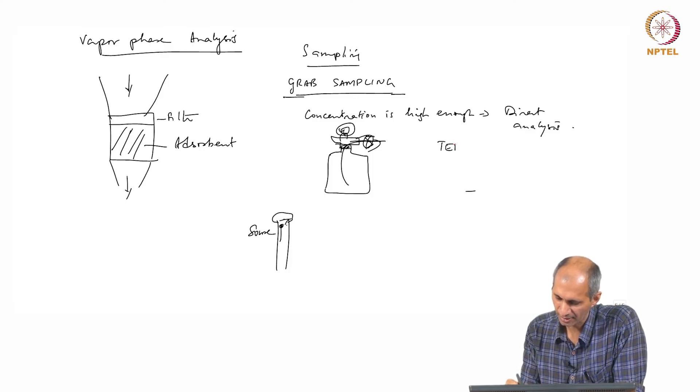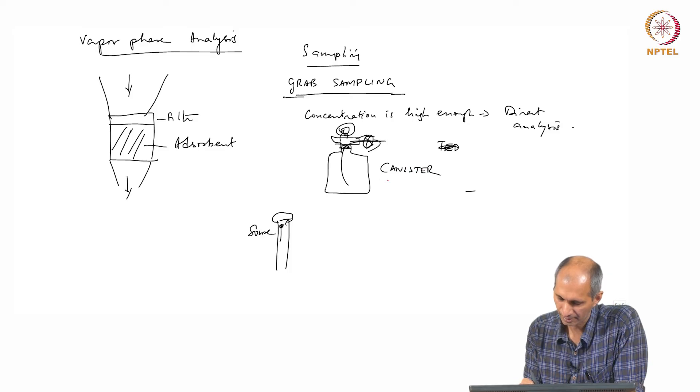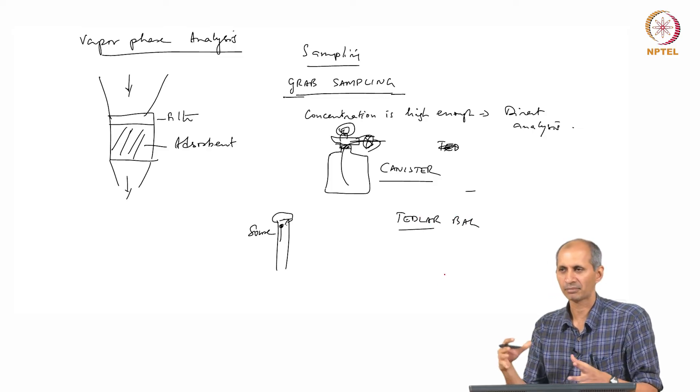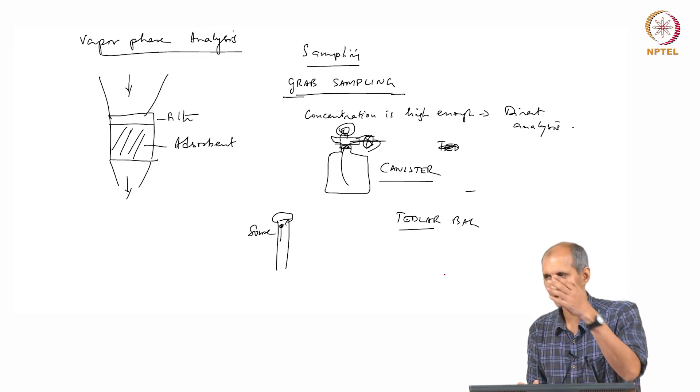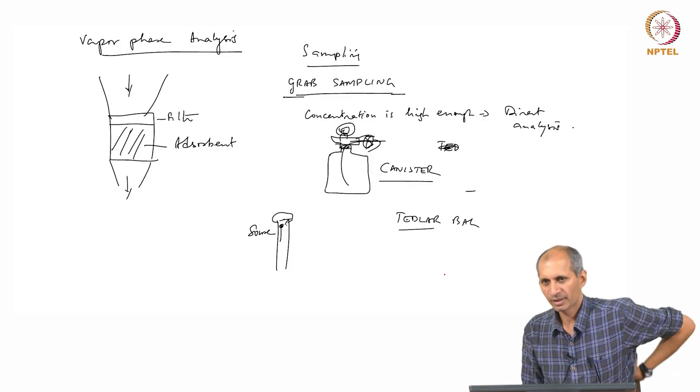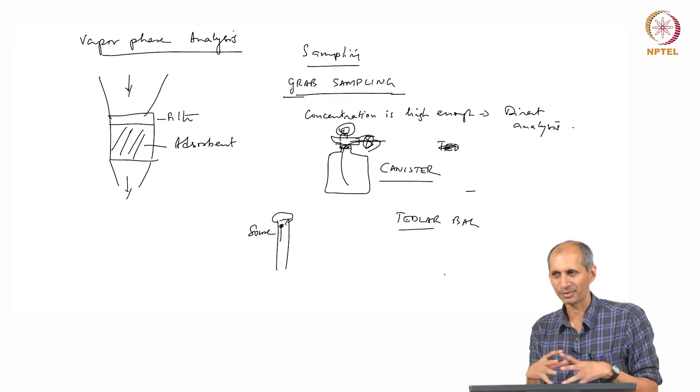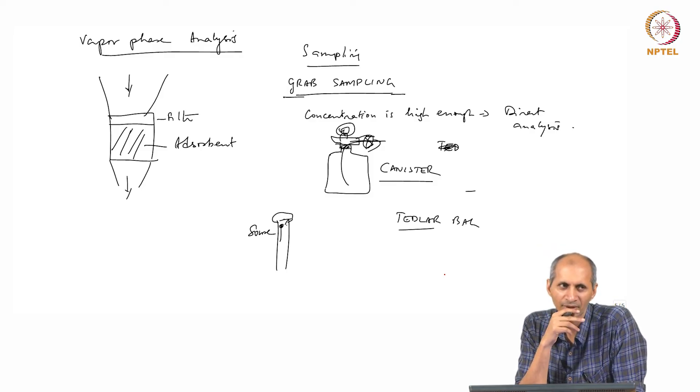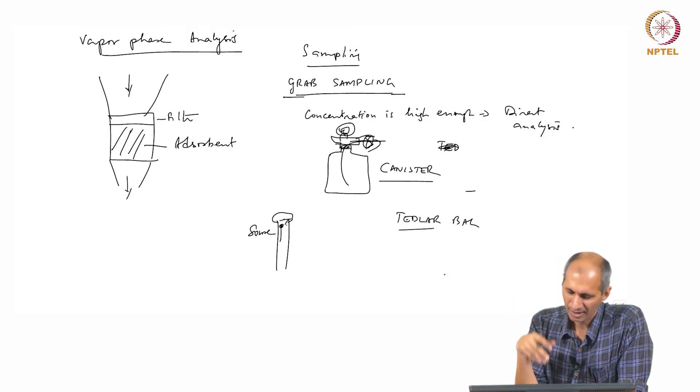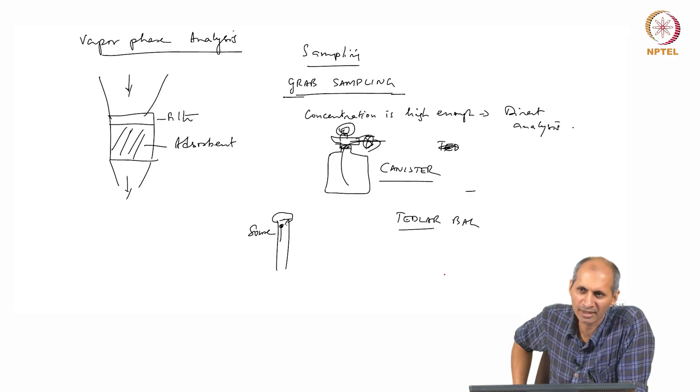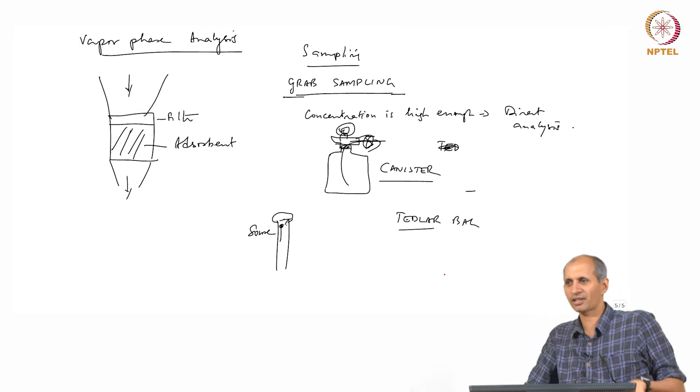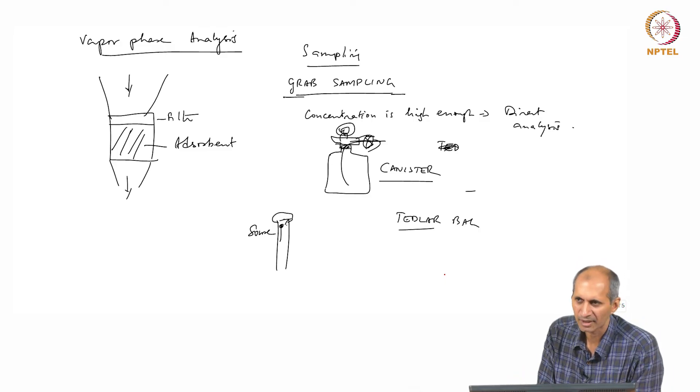This is called a canister and there is another instrument called a Tedlar bag. Tedlar is a name of a material, this is like a plastic bag. Here same way you evacuate it using a vacuum pump and you can see this plastic bag like a balloon, it will puff up. You can see that it has air sample, that's the advantage of plastic bags. The canisters are usually stainless steel which for organic analysis is simpler. These are grab sampling.